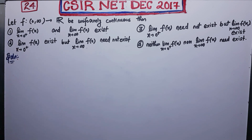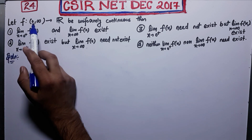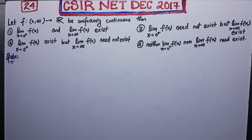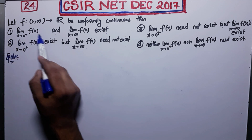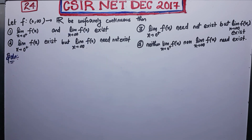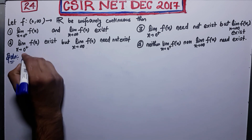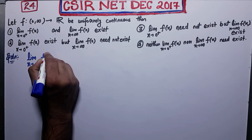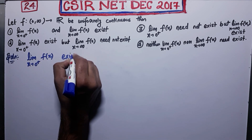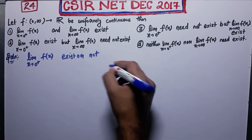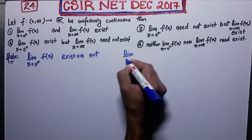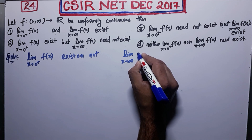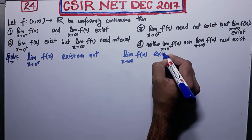It says: let f from (0, ∞) — the open interval — be uniformly continuous. So f is a real-valued function which is uniformly continuous over this domain. Then you need to check whether this limit will exist: limit as x→0+, and whether this limit will exist: limit as x→∞ of f(x). You need to check the existence of both of these limits.